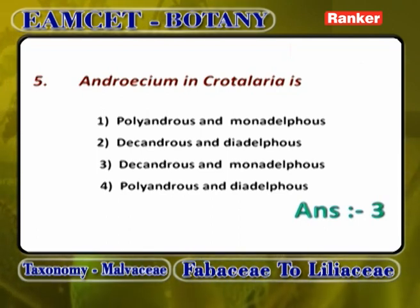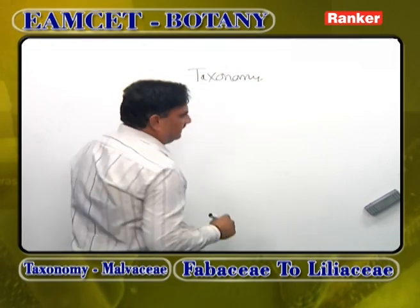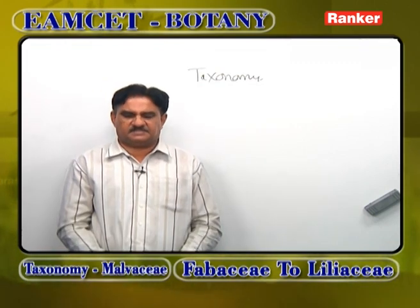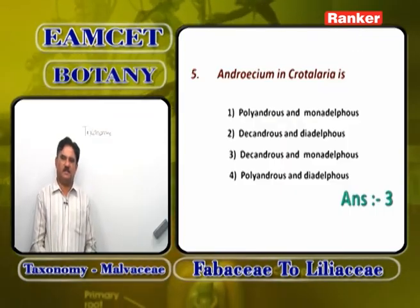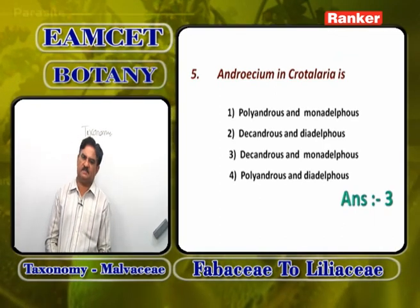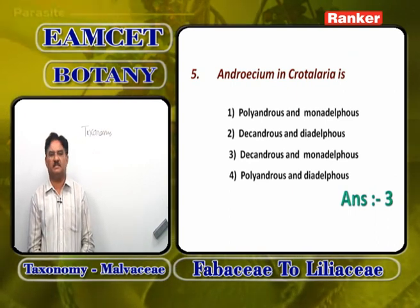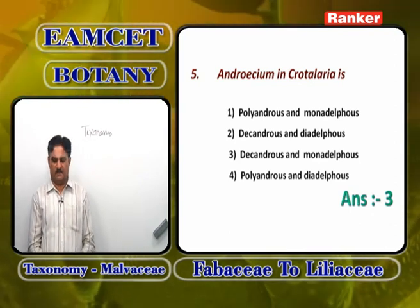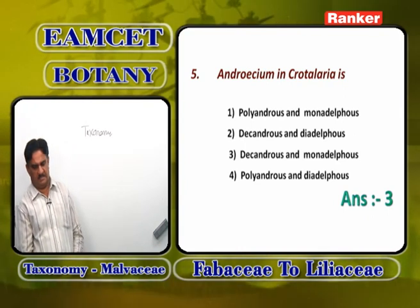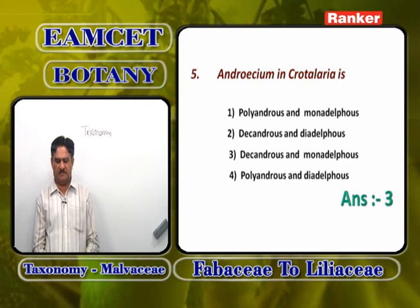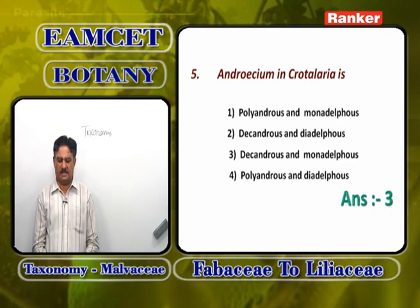Androecium in Crotalaria is Decandrous — meaning 10 stamens are present. In all plants of Fabaceae, stamens are usually Diadelphous. But two plants show Monadelphous condition: one is Crotalaria, the other is Arachis. Polyandrous is wrong, Monadelphous is correct, Decandrous is correct, Diadelphous is wrong. The correct answer is Decandrous and Monadelphous.